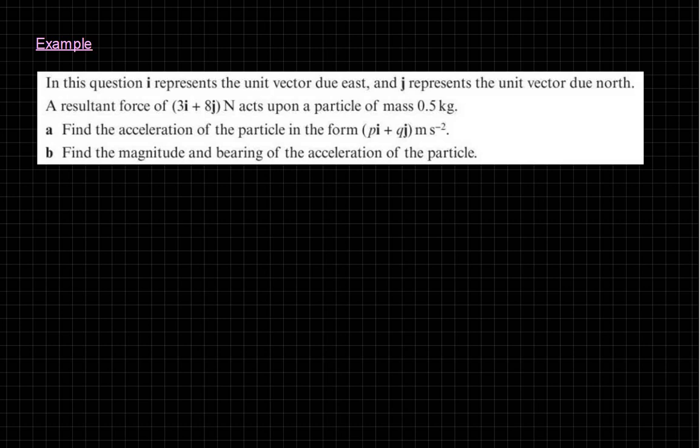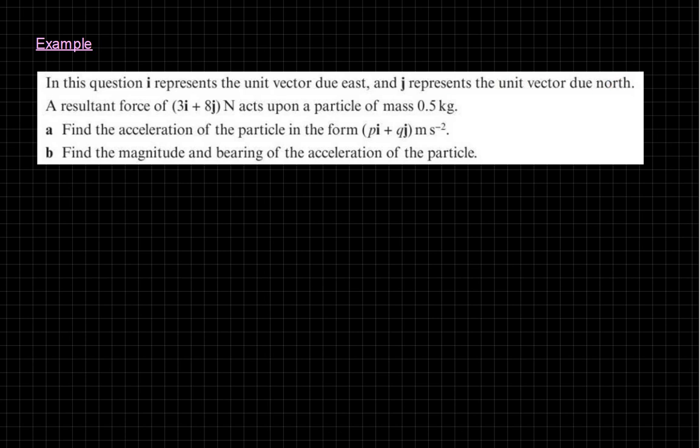Okay, so let's start looking at some examples. I think I've got three examples I want to go through. Let's look at this first one. They're telling us I is due east, J is due north. They'll always tell you that, just for clarification, but it's always the case. I is to the right, J is upwards. You've got a resultant force of 3i plus 8j, you've got a mass of 0.5. What is the acceleration of the particle in that form? So this is nice and easy. F is a resultant force. This is 3i plus 8j, mass is 0.5. Use F equals MA.